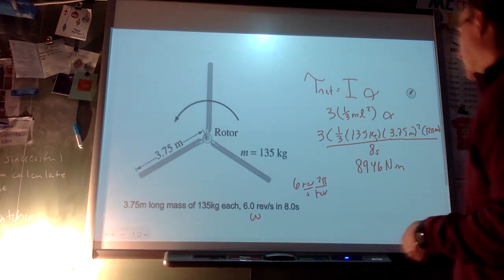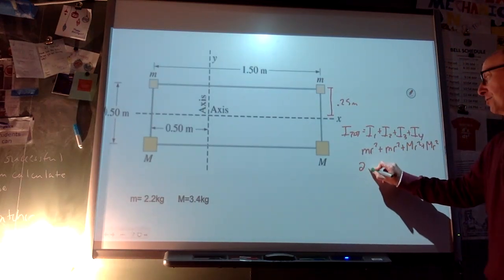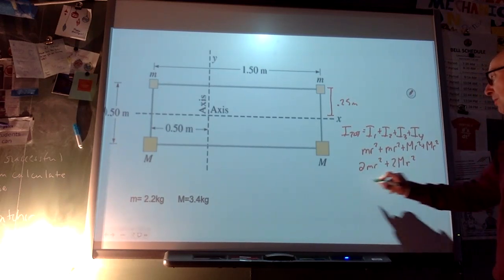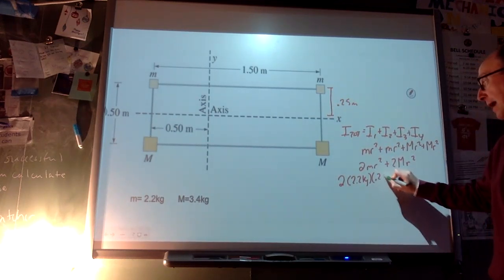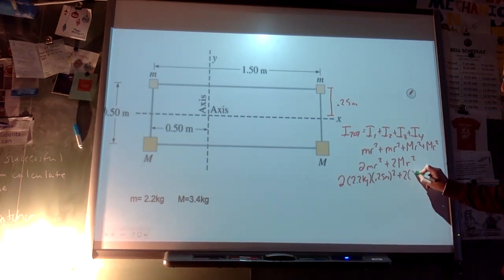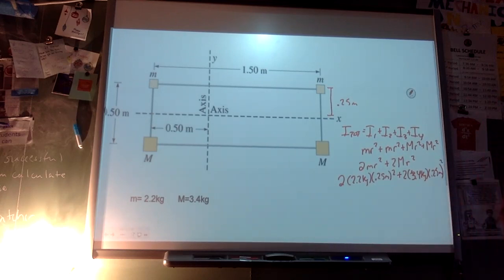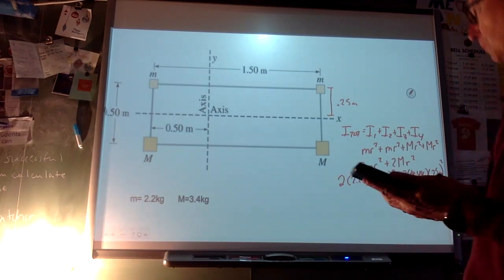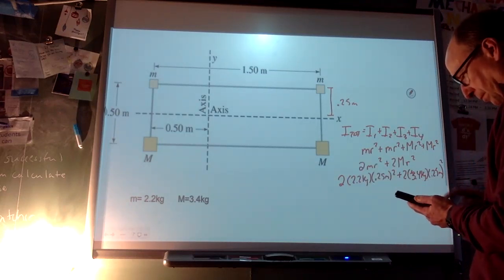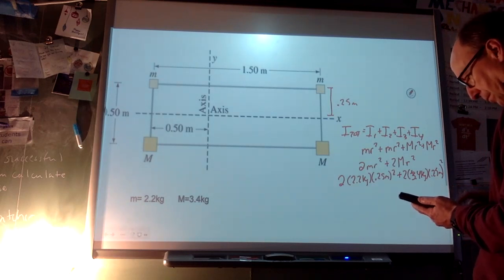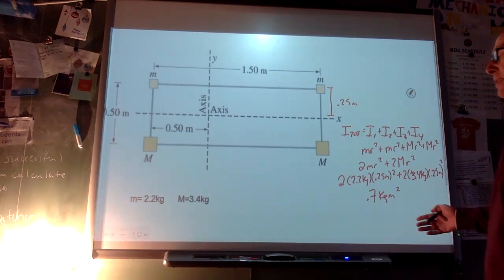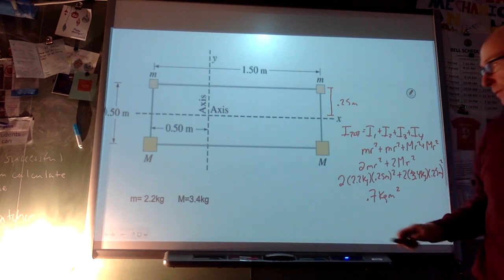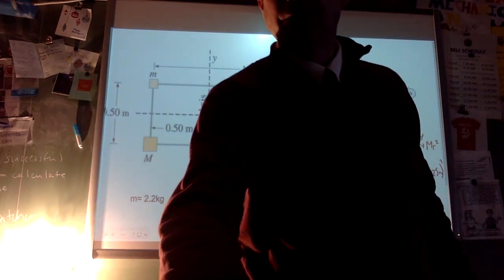Back to the rectangular system: plugging in the small masses as 3.4 kg each at r = 0.25 m, I = 2(3.4)(0.25²) + 2M(0.25²) = 0.7 kg·m² for the x-axis. The result will be different if you choose the y-axis instead. Good luck.